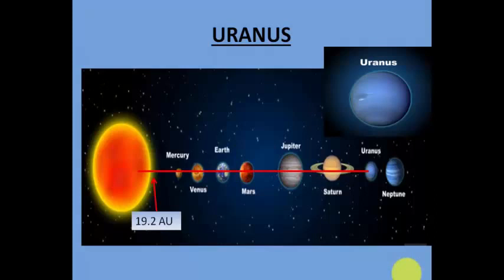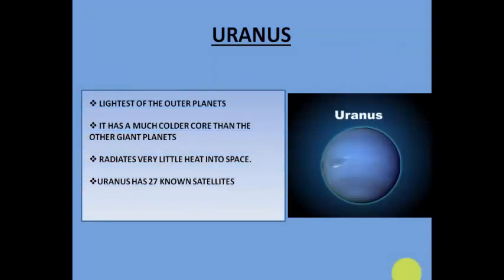Uranus and Neptune look blue in color because they are far from the Sun, making their atmospheres extremely cold. The distance between the Sun and Uranus is 19.2 astronomical units. Uranus is the lightest of the giant planets, has a much colder core, radiates very little heat into space, and has 27 known satellites.